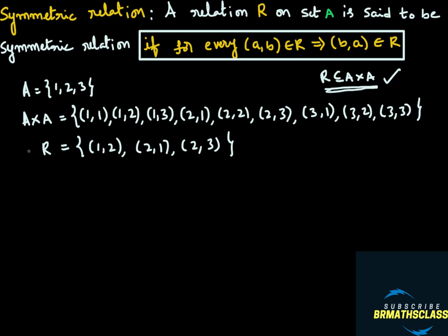Is this relation symmetric or not? How to check: for every ordered pair (A, B) belonging to R, if (B, A) is also there in the relation, then it is symmetric. You take ordered pair (1,2) — is (2,1) there in this relation? Yes, it is there. Now you take ordered pair (2,1) — is (1,2) there? Yes, it is there.